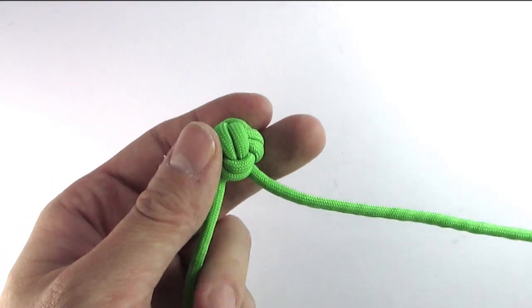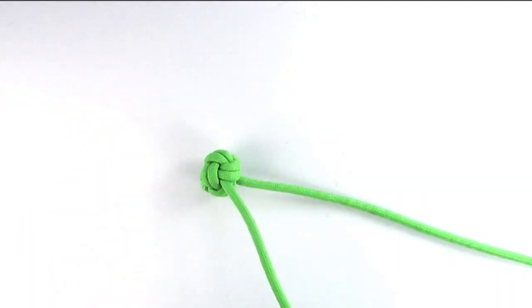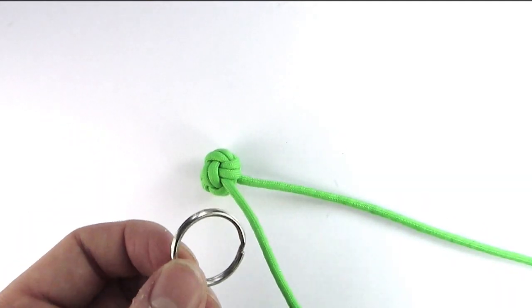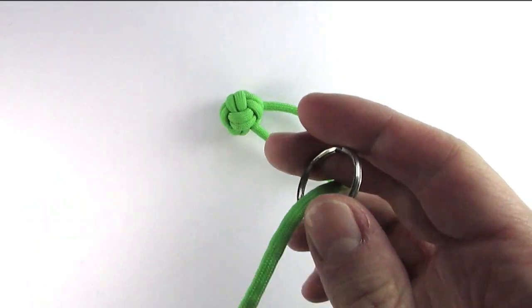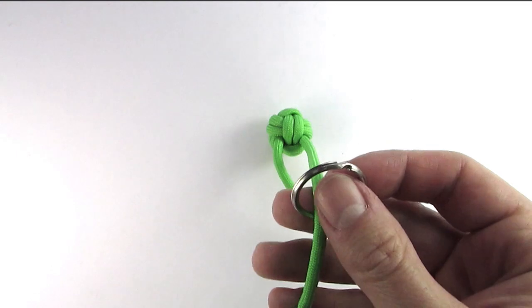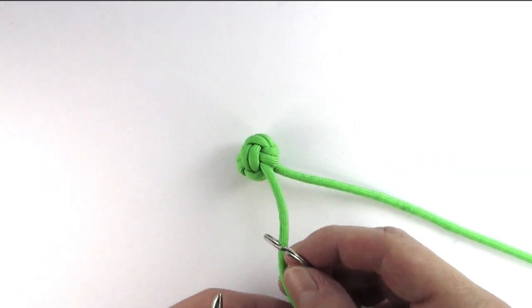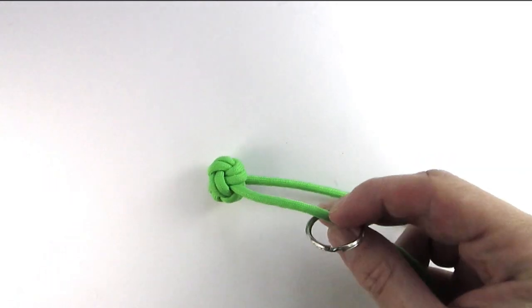I like to finish using only one cord, so I'll snip the other and feed my working end through a keyring. Then I'll wrap my cord around itself.